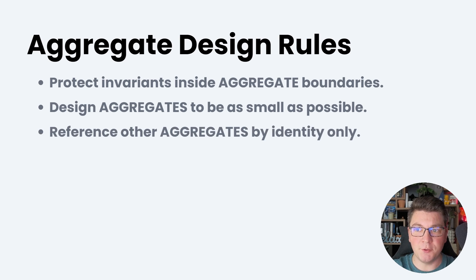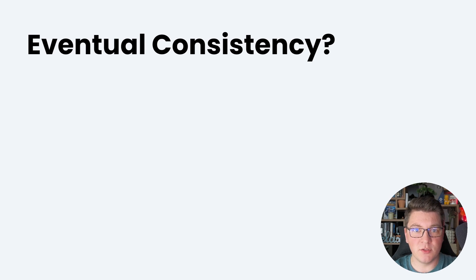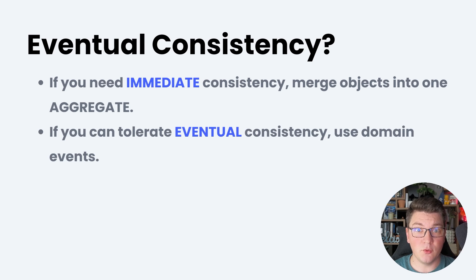When interacting with other aggregates, only reference them by the identity — the ID of the other aggregate root. If you need to update one aggregate from another, try to do so eventually by publishing a domain event, then a messaging component subscribes to that event and updates the other aggregate. If you need immediate consistency between multiple aggregates, consider merging them into one aggregate. Otherwise, if you can tolerate eventual consistency, use domain events.